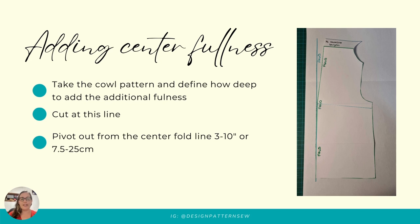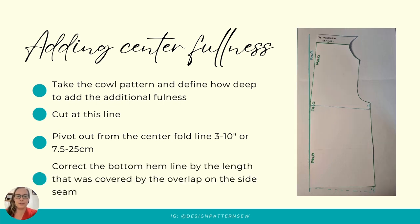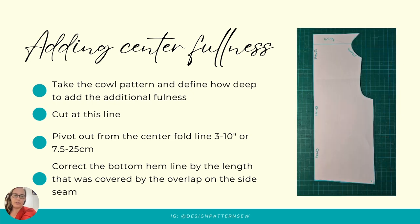We're going to pivot the paper pattern — the top pattern piece — outwards. We could widen this anywhere between 3 to 10 inches or 7 to 25 centimeters depending on how much additional fullness we want. Take note that at our side seam we're actually overlapping pieces of paper, and we're going to have to add this additional length to the bottom of our outside seam. Then we'll trace around our new pieces and this is our cowl neckline with added center fullness.